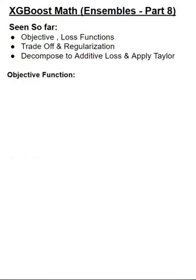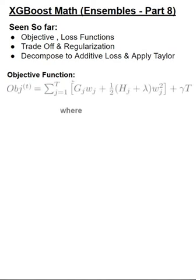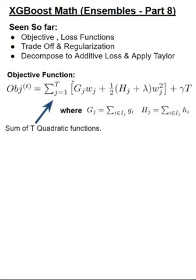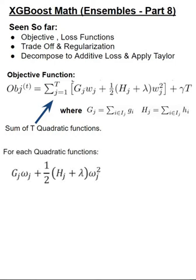Now, this particular objective function that we have derived and simplified is a sum of T quadratic equations. For each quadratic function, we now will be able to derive an optimal weight which is Wj, which is what we want to derive. And that Wj is simplified as minus Gj by Hj plus lambda.